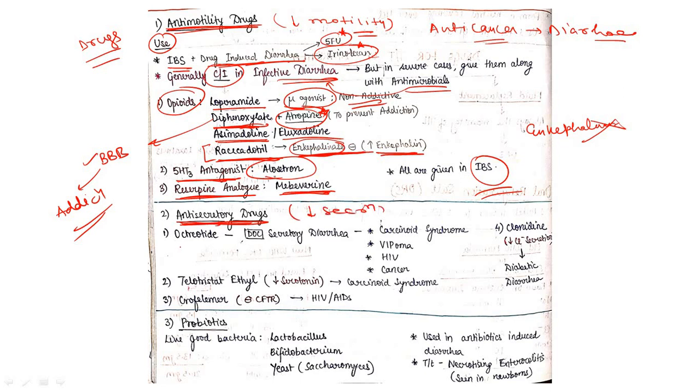It includes three drugs: octreotide, telotristat ethyl, then crofelemer. Octreotide is the drug of choice for secretory diarrhea. We can see secretory diarrhea in carcinoid syndrome and VIPoma. Telotristat ethyl is also given in carcinoid syndrome - it decreases serotonin secretion. Crofelemer inhibits CFTR and can be given in HIV or AIDS.